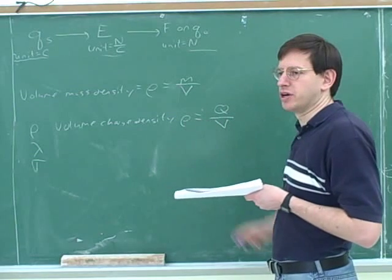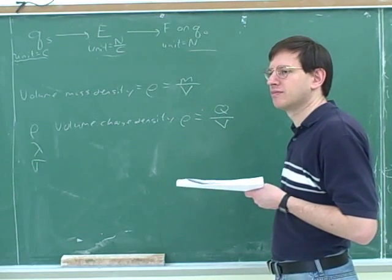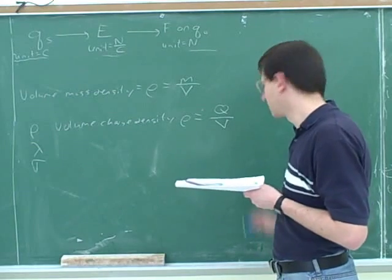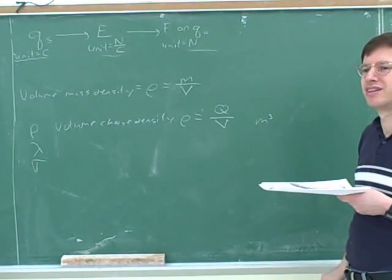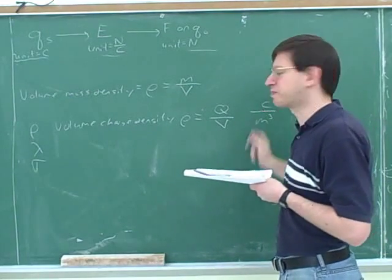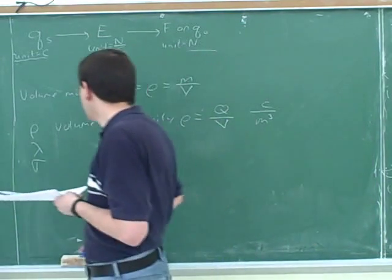What would be the units then for rho? Q over meters cubed. Good. Except what are the units for Q? I'm sorry, coulombs. That's right. The symbol is Q and the units are coulombs per cubic meter.